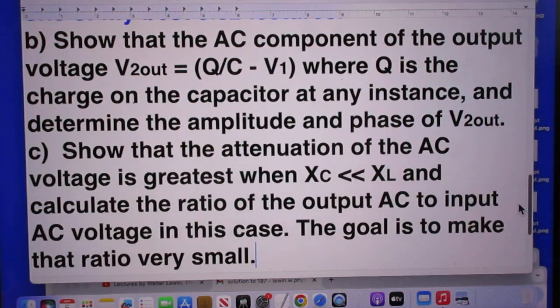Second question: show that the AC component of the output voltage is Q/C minus V1, where Q is the charge on the capacitor at any instance, and determine the amplitude and phase of V2out.